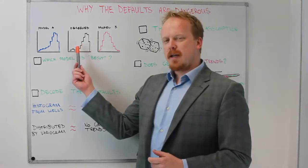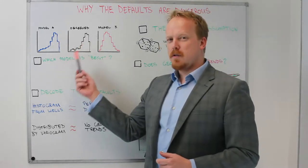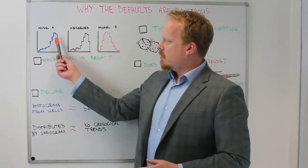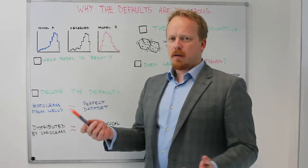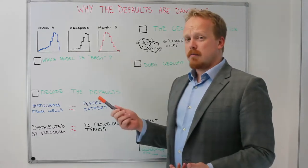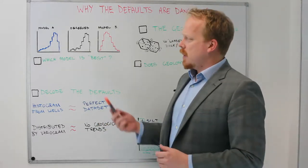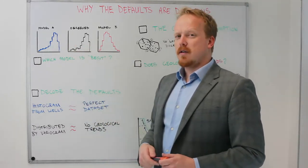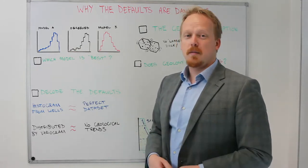So if you have an input data set like this that's got a negative skew, so a tail off towards the low end, and you have a model that matches that very accurately or a model that doesn't, something that goes the other direction, which one of these do you think is likely to be a better model?